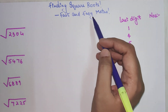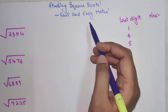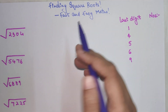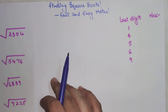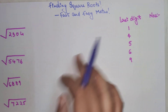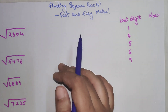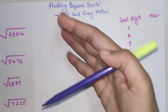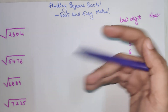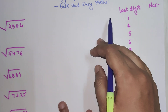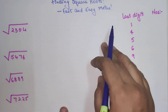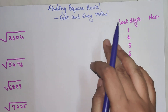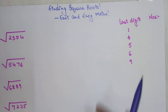Welcome everyone to my channel, Fast and Easy Math, which is dedicated to giving you tips and tricks related to mathematics. Today we are going to find square roots of big numbers in a matter of seconds with a very simple trick.